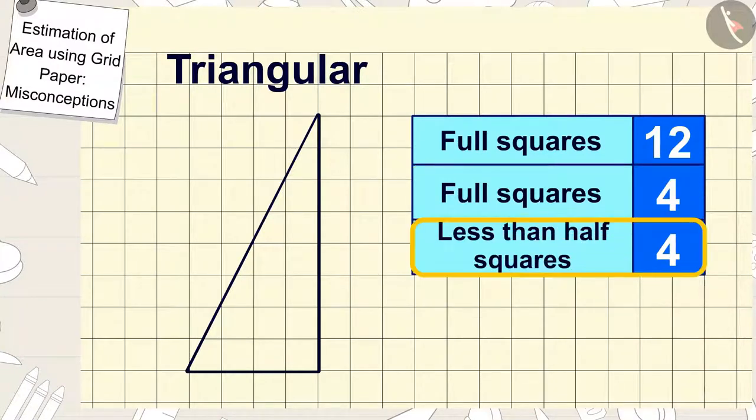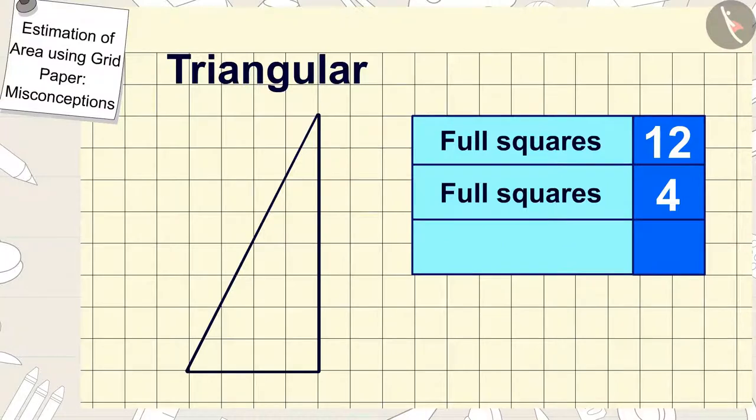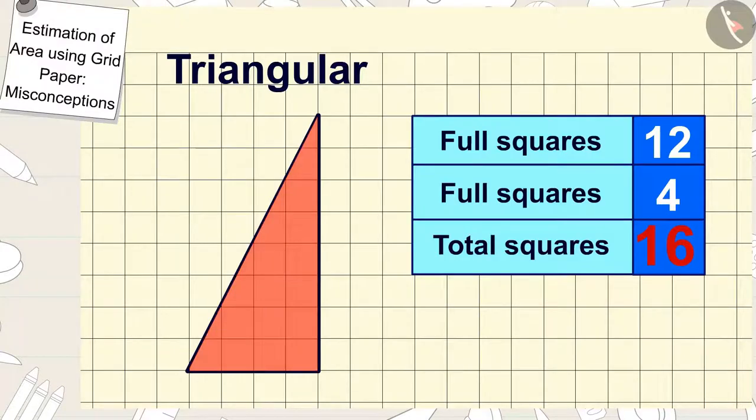And we don't count the less than half squares. In this way, there are sixteen squares in the area of the triangle shaped plate.